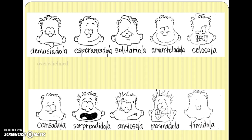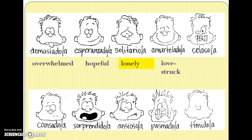Next row: demasiado means overwhelmed. Esperanzada means hopeful. Solitario means lonely — it looks like 'solitaire' or 'solitary,' meaning one person alone, so the associated feeling is lonely. Amartelado means lovestruck — you can see the word 'amar,' which means to love, in the first part. And celoso means jealous.